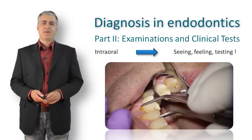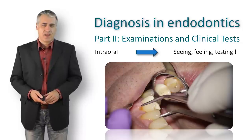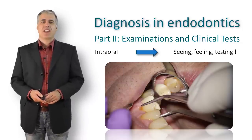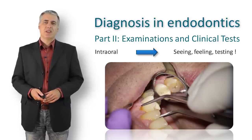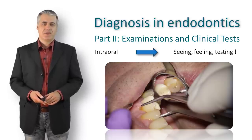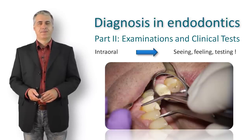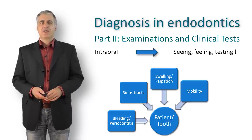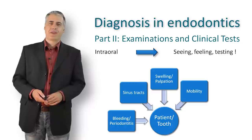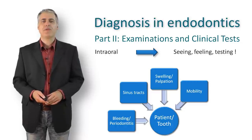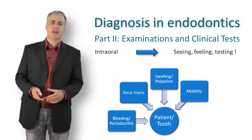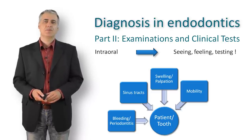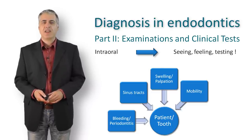The adjacent teeth have to be tested as well. Each mobility greater than plus one should be considered abnormal, but in most cases the mobility disappears when the causative factors are eliminated. An important step in endodontic diagnosis is to check the pocket depth in each tooth, performed on the mesial, distal, lingual or palatal, and vestibular aspects with a calibrated periodontal probe; findings must be documented.